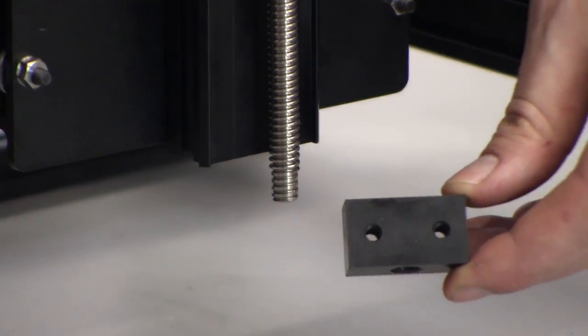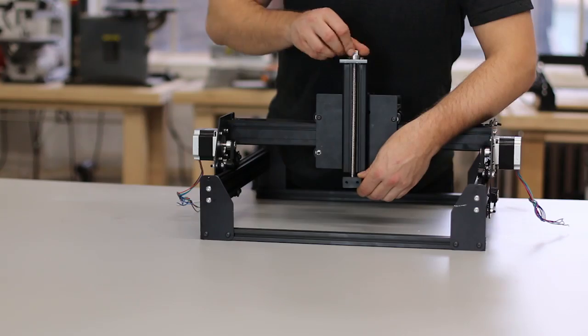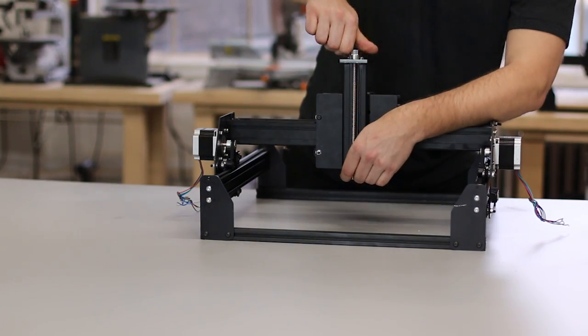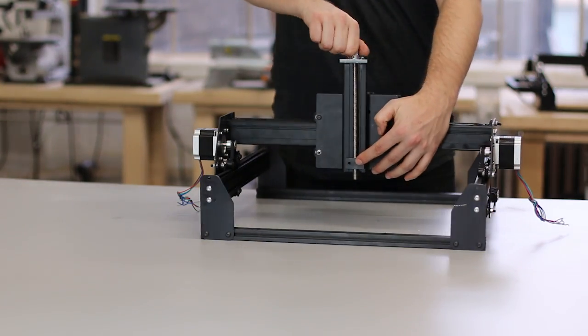After you've tightened the set screws on the pulley, check again to make sure there is no slop between the pulley and the bearing. If there is, loosen the set screws and try again.